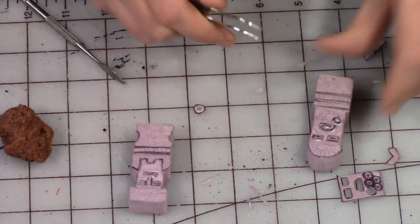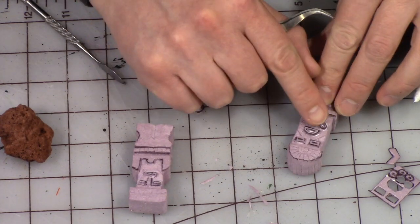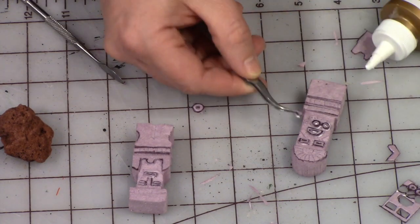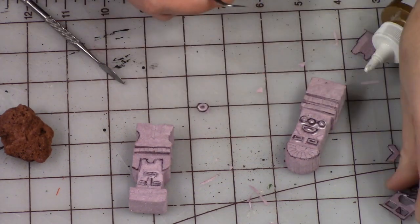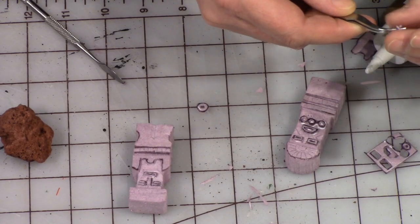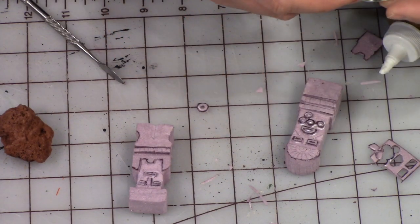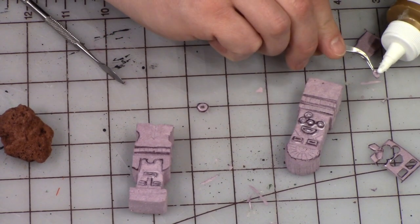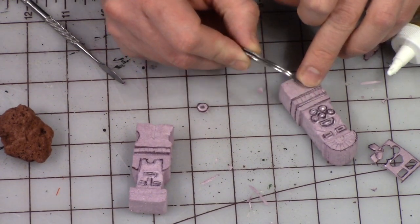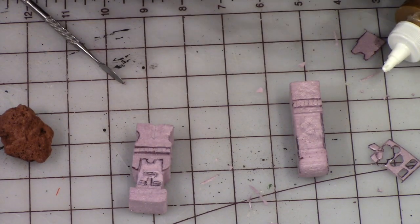Once the glue is set up a little bit, I will come back and use the stone to texture the face of each of those pieces a little bit so that they have that same stone texture. I'm gluing on the side pieces as well.